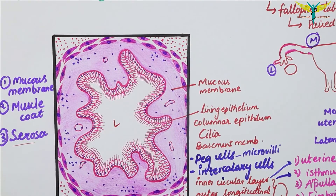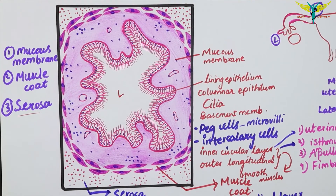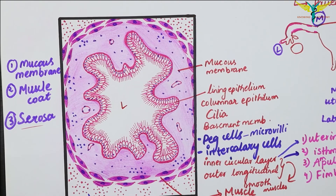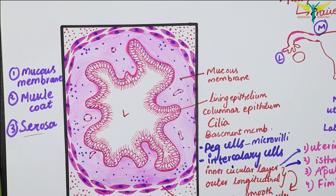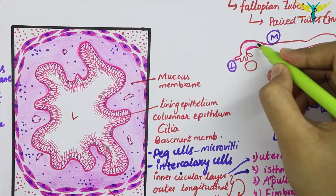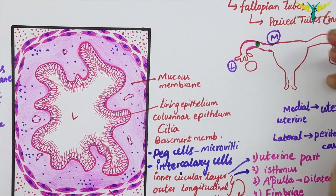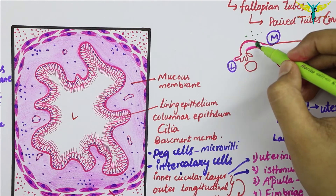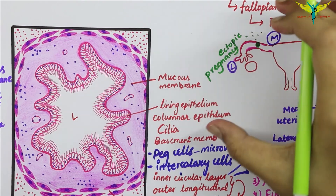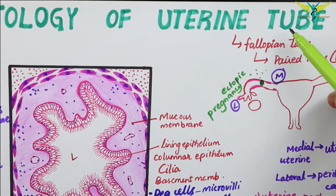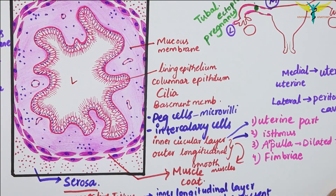The clinical correlation of the uterine tube is ectopic tubal pregnancy. The term ectopic refers to the implantation of a fertilized ovum in the uterine tube — ectopic meaning unnatural positioning. Ectopic tubal pregnancy is the most common form of ectopic gestation, and it can be a serious problem due to rupture followed by intraperitoneal hemorrhage.